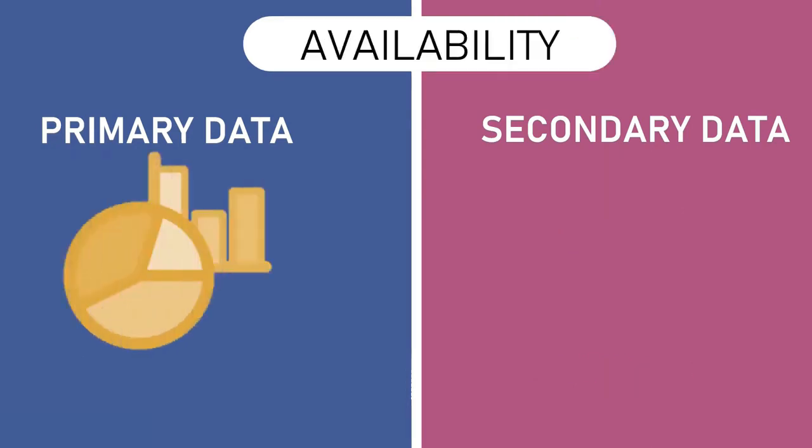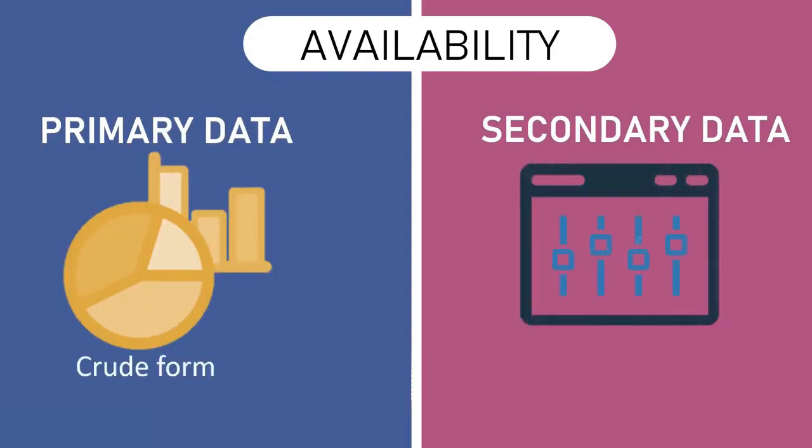Availability: Primary data is available in crude form, while secondary data is available in a refined form. That is, secondary data is usually made available to the public in a simple form for a layman to understand, while primary data are usually raw and will have to be simplified by the researcher.